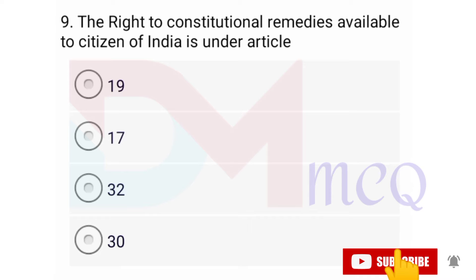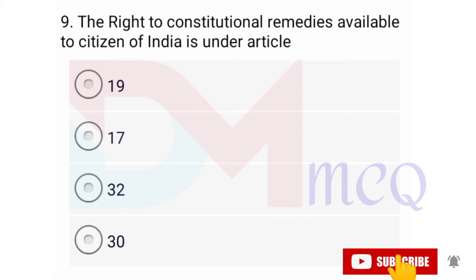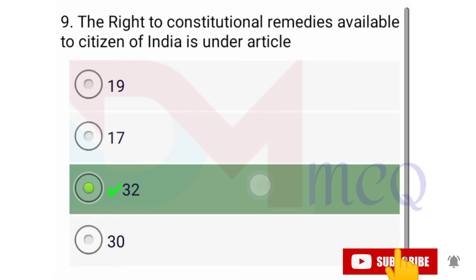Question number nine: The right to constitutional remedies available to citizens of India is under which article? Options are 19, 17, 32, 30. Correct option is 32. Article 32 provides the right to constitutional legal remedies.